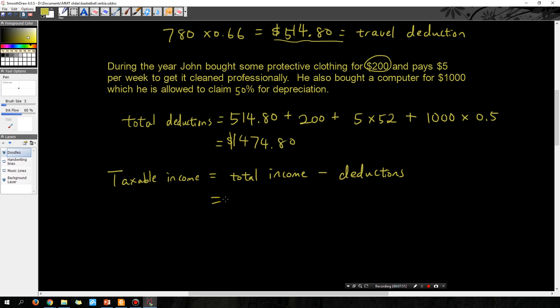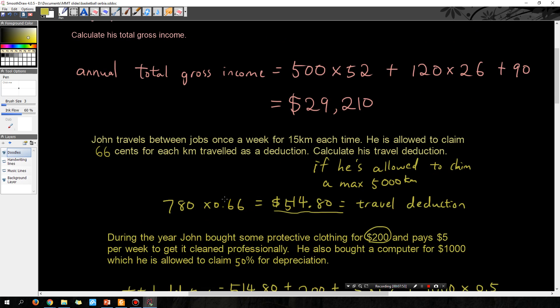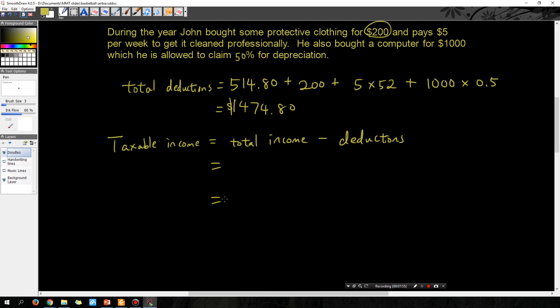So then we have, what is this, total income: 29,210 minus his deductions: 1474.8. How much do I have left?